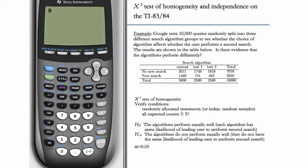Is there evidence that the algorithms perform differently? We have the data in this two-way table here, and you can see we have the row totals and column totals already computed.